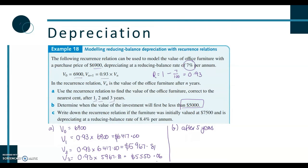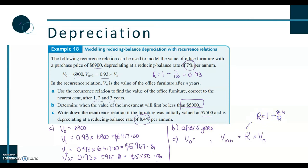Part c gives a different scenario: write down the recurrence relation if the initial value is $7,500 and it's depreciating at 8.4% per annum. We write the initial value, then Vn+1 = r × Vn, where r = 1 − 8.4/100 = 0.916. So: V0 = 7500, Vn+1 = 0.916 × Vn.